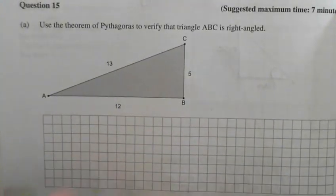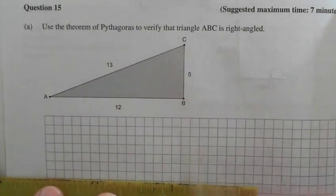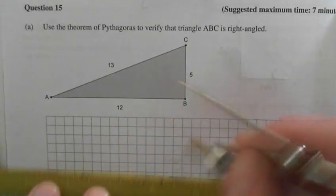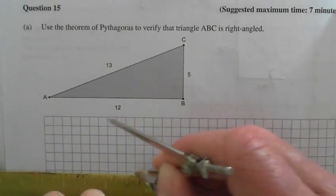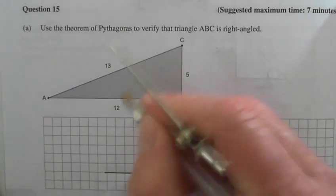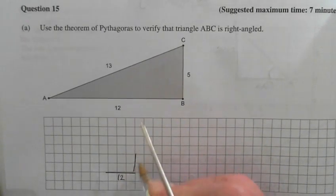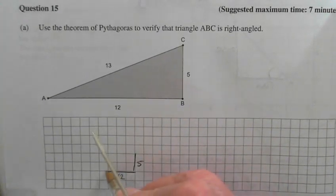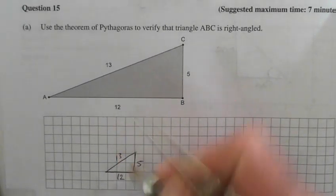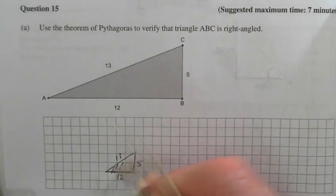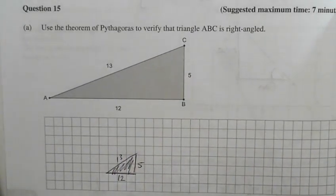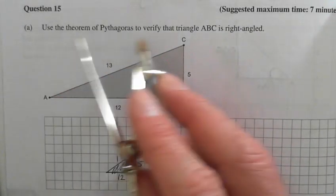Right, so what I'll do is I'll draw this triangle. I'll draw it smaller so you can see. So that's 12, that's my 5, and that's my 13. I just drew it smaller.